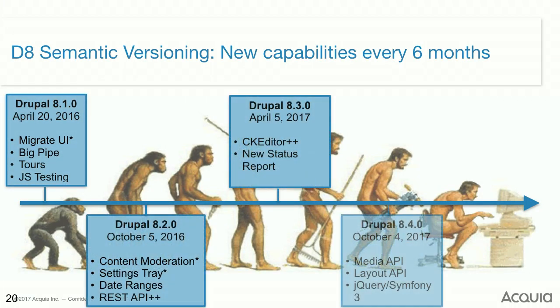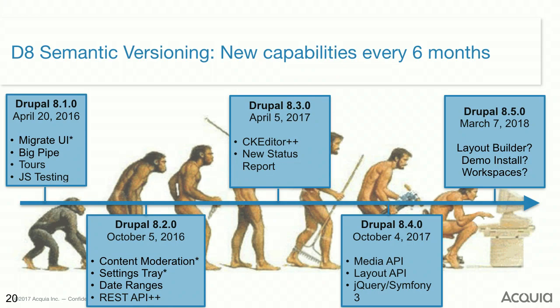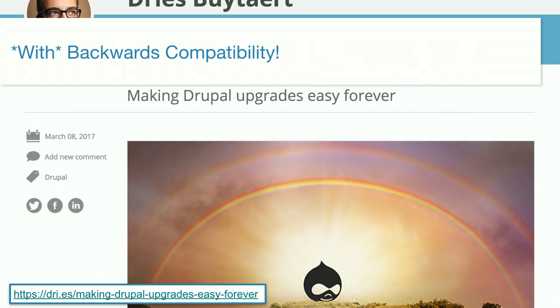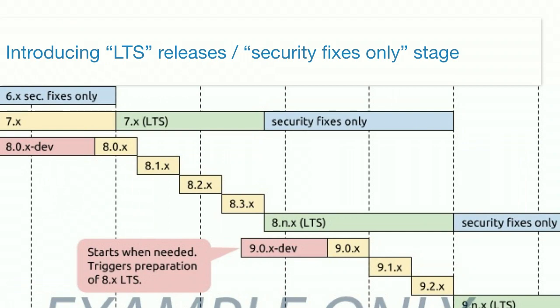In Drupal 8 we do this instead: every six months there's what's called a minor release. A minor release just means we increment the middle number — 8.1.0, 8.2.0, 8.3.0 and so on. Each point release is an opportunity to ship new features, new APIs, and bug fixes — without breaking backwards compatibility. We keep the old APIs, mark them deprecated, and advise people to get off of them, but your code won't break the way a major version change like 7 to 8 would have broken things. We've decoupled 'ship new features' from 'break all your stuff.'